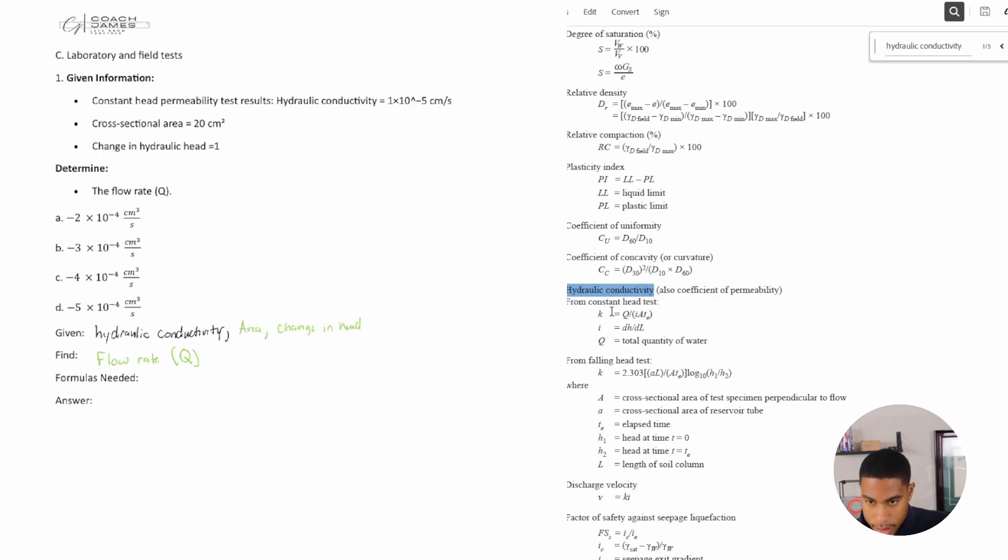All right, so hydraulic conductivity here is going to be K, which equals Q (the total quantity of water)... change in head over change in length. We are not given the length of the soil column. A is the cross-sectional area of the test specimen perpendicular to flow. There's also a reservoir and a period of time, so I don't think that's the right formula for this one.